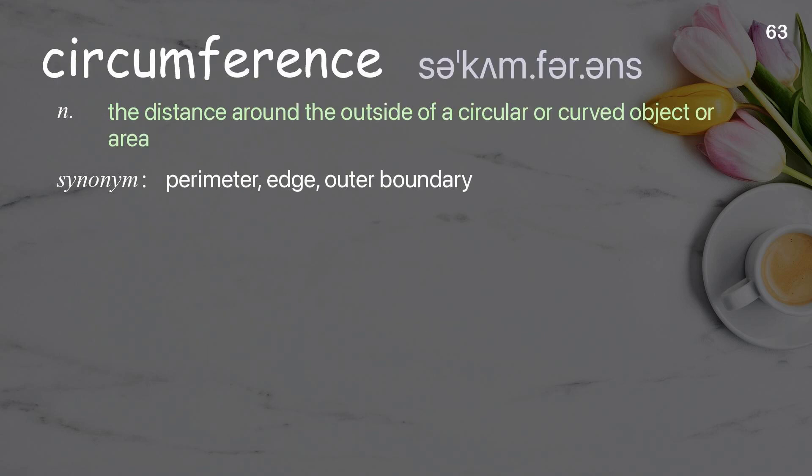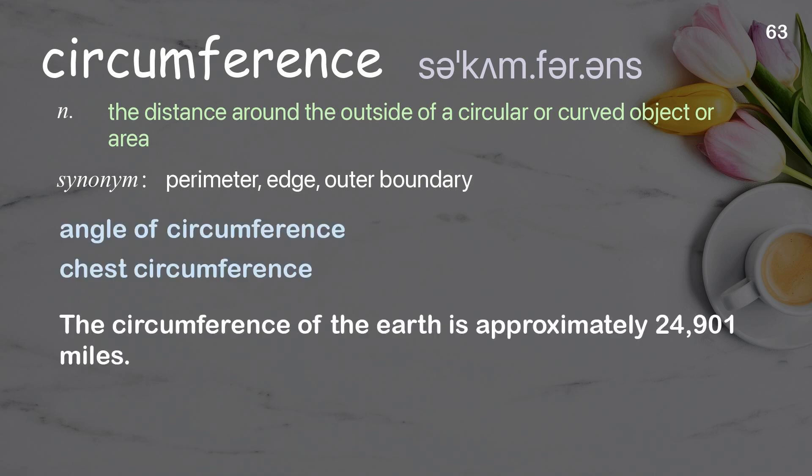Circumference. The distance around the outside of a circular or curved object or area. Examples: angle of circumference, chest circumference. The circumference of the earth is approximately 24,901 miles.